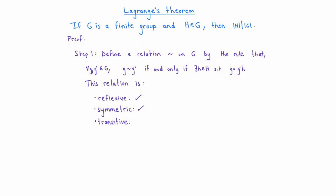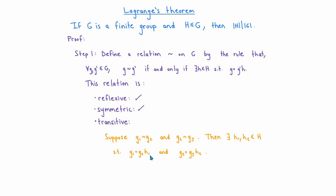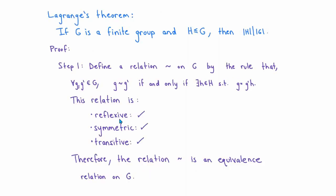To see why this relation is transitive, suppose we have three elements g1, g2, and g3 in G, with g1 related to g2 and g2 related to g3. By definition, there exist h1 and h2 in H such that g1 equals g2 times h1, and g2 equals g3 times h2. Substituting g3h2 for g2 in the first equation, by associativity we get g1 equals g3 times (h2 h1). Since H is closed under multiplication, h2h1 is in H, so g1 is related to g3. Since the relation is reflexive, symmetric, and transitive, it is an equivalence relation on G.